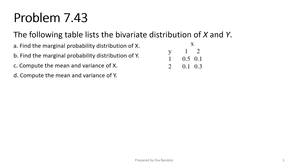Problem 7.3 is about bivariate distribution of x and y. This is a basic warm-up problem about bivariate distribution, and then we'll proceed with more advanced ones. We are given the bivariate distribution of x and y. Let me remind you how to read a bivariate distribution table. For example, the value 0.3 means the probability that x equals 2 and y equals 2, while 0.1 is the probability that x equals 1 but y equals 1.